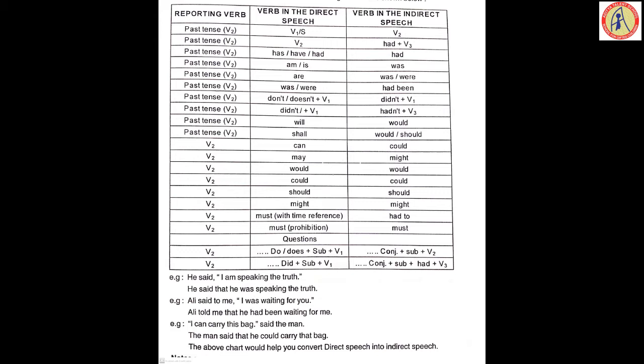Example: 'He said, I am speaking the truth.' The reporting verb 'said' is past tense. The speech 'I am speaking the truth' is present continuous. It changes to past continuous. 'He said that he was speaking the truth.' Now: 'Ali said to me, I was waiting for you.' 'Said to me' changes to 'told me'. 'I' refers to Ali, so 'Ali told me that he had been waiting for me' — was/were changes to had been.